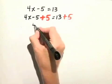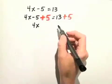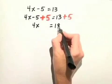Now, we have 4x minus 5 and plus 5 add to 0, which equals 18.